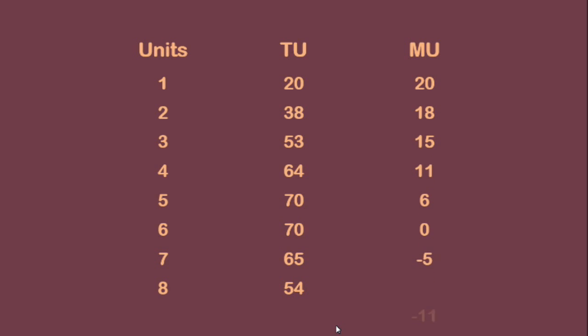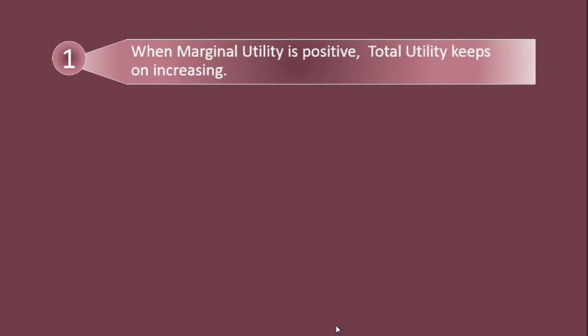Based on this, we shall examine the relation between Total Utility and Marginal Utility. First relation: when marginal utility is positive, total utility keeps on increasing.